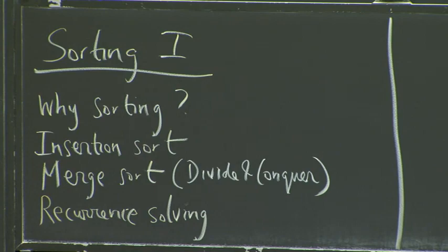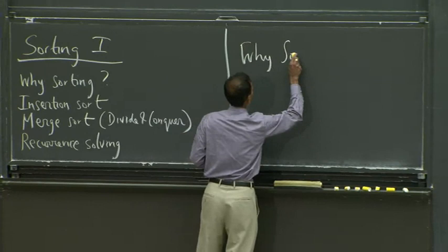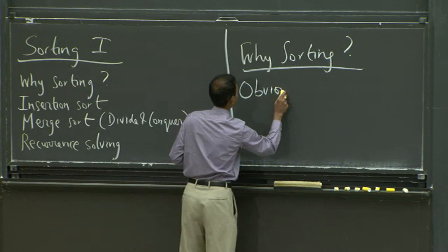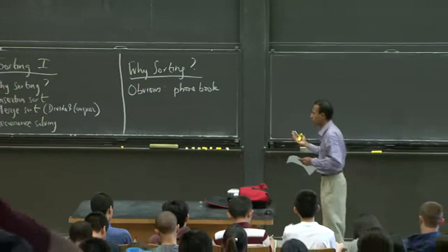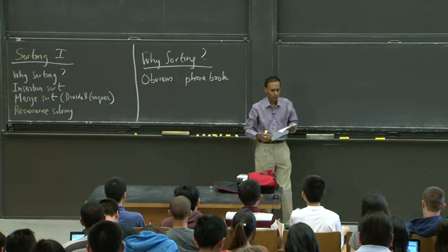So let's talk about why we're interested in sorting. There are some fairly obvious applications. If you want to maintain a phone book, you have a bunch of names and numbers corresponding to a telephone directory, and you want to keep them in sorted order so it's easy to search — MP3 organizers, spreadsheets, et cetera. So there are lots of obvious applications.